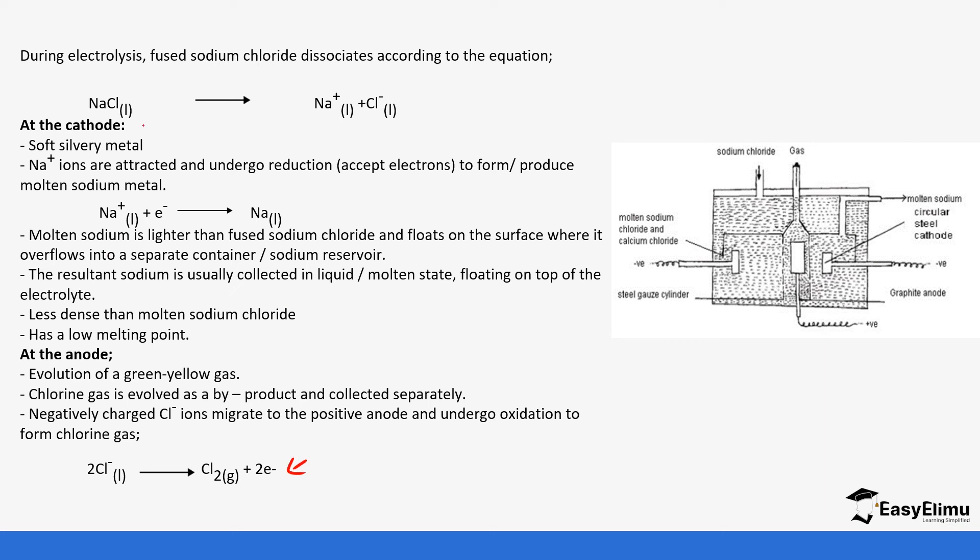At the cathode, we are preferring sodium ions over hydrogen ions which are in the solution. But because of the high concentrations of sodium ions and because we have chosen a specific electrode, it helps in its discharge. Sodium ions are discharged at the cathode. The sodium ions in solution gain those electrons to form sodium liquid. It is extracted in molten state because the melting point was lowered.